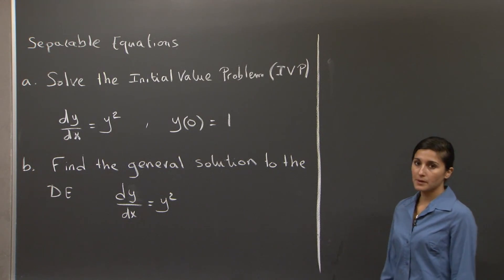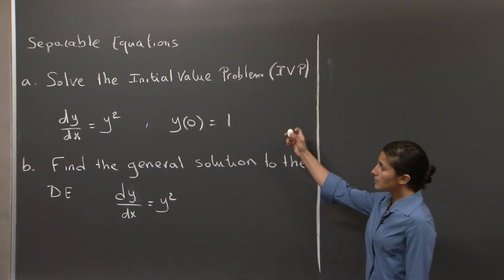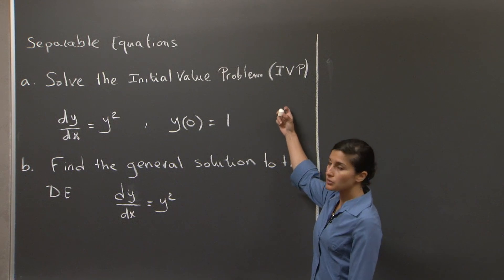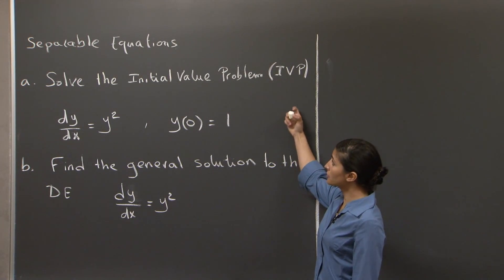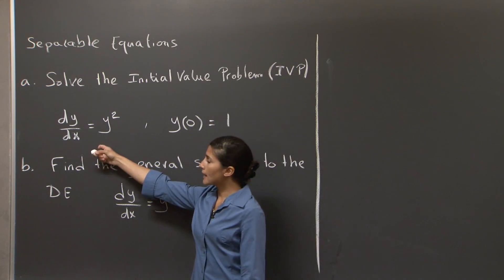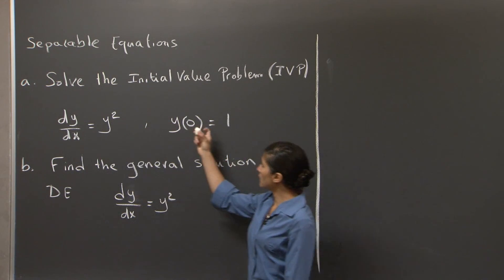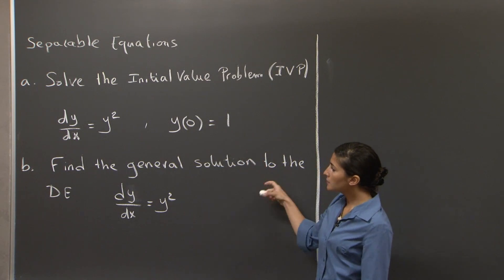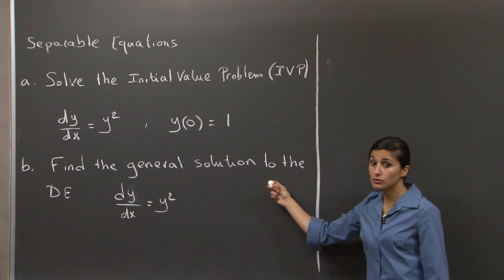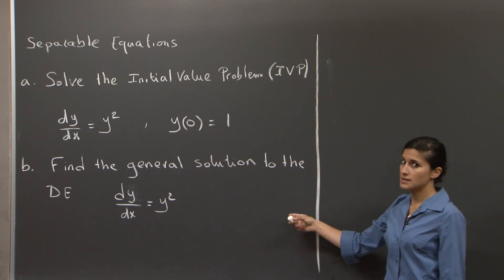Welcome to this session on separable equations. In this problem, you're asked in the first question to solve the initial value problem dy/dx equals y squared, with initial condition y(0) equals 1. In the second part of the problem, you're asked to find the general solution where no initial condition is imposed.